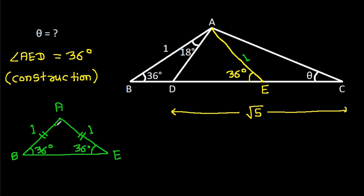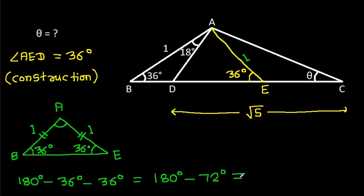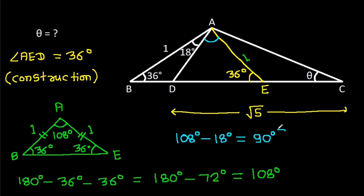And this angle will be 180 degrees minus 36 degrees minus 36 degrees, which is 180 degrees minus 72 degrees, that will be 108 degrees. So this angle is 108 degrees. Then this angle will be 108 degrees minus 18 degrees, that will be 90 degrees.